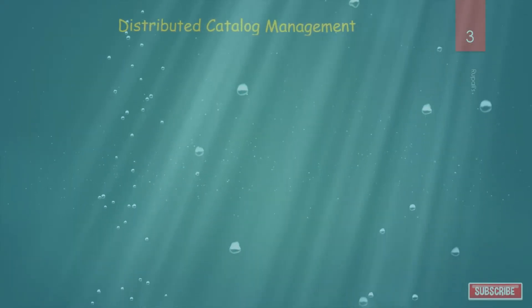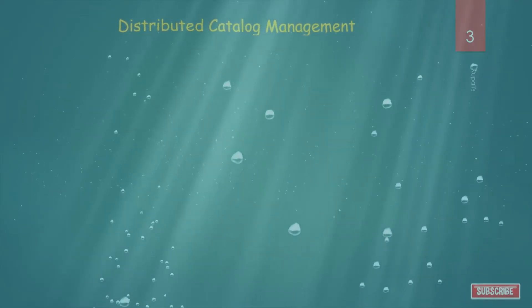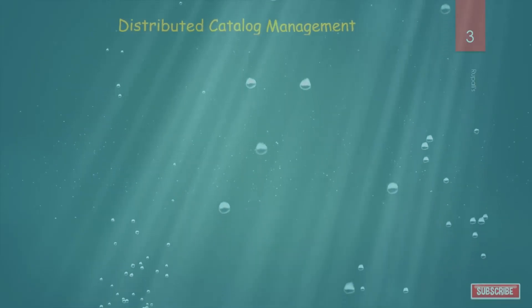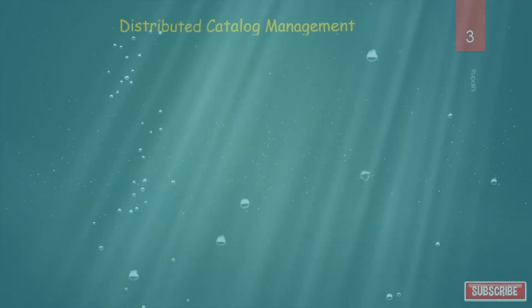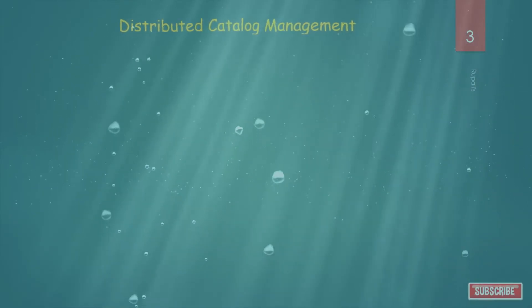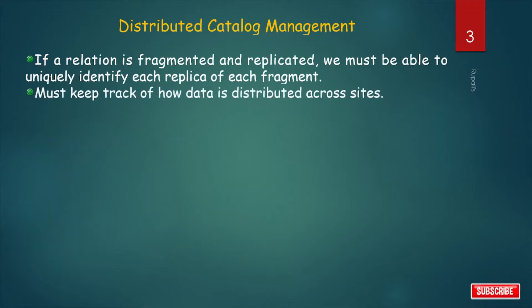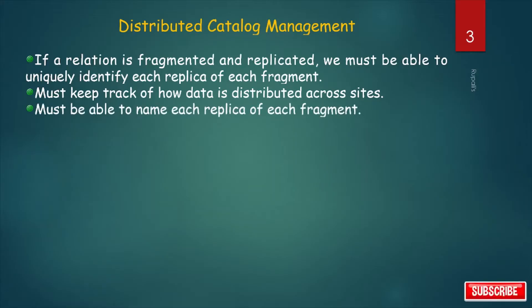What is the utility of learning Distributed Catalog Management? In a Distributed Database System, the whole database is first fragmented and then replicated at different sites. If a relation is fragmented and replicated, we must be able to uniquely identify each replica of each fragment, keep track of how data is distributed across sites, and name each replica of each fragment.